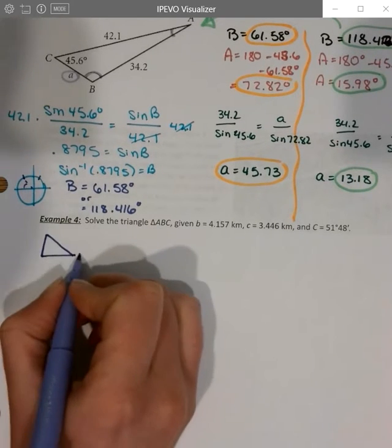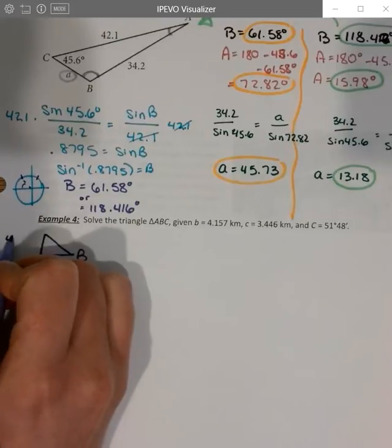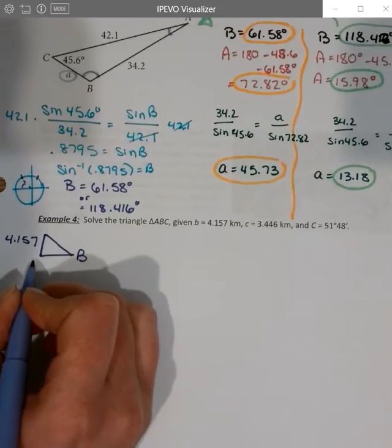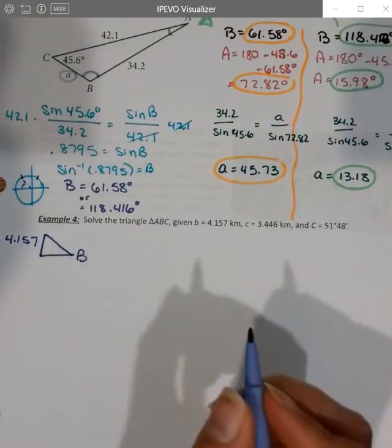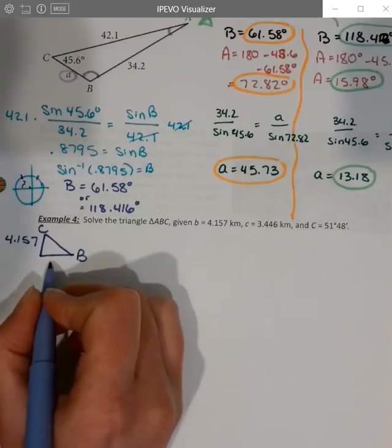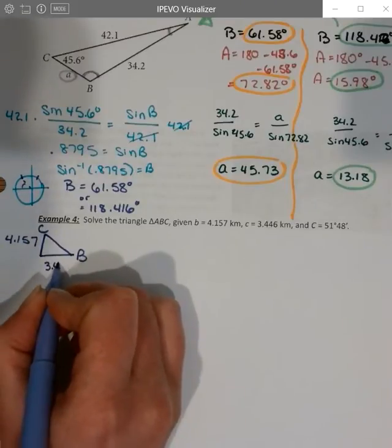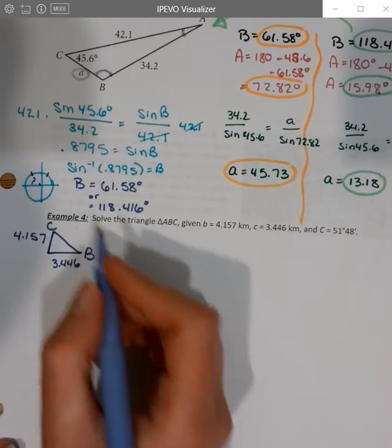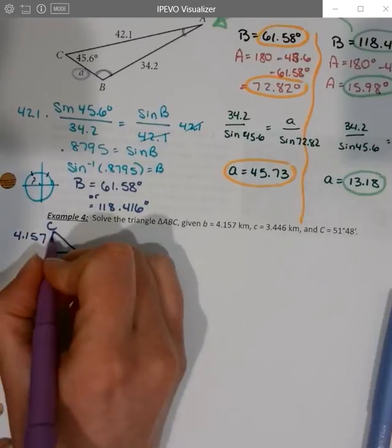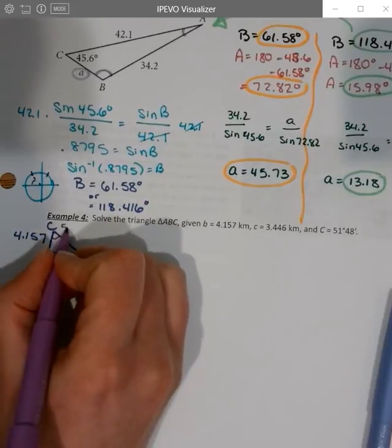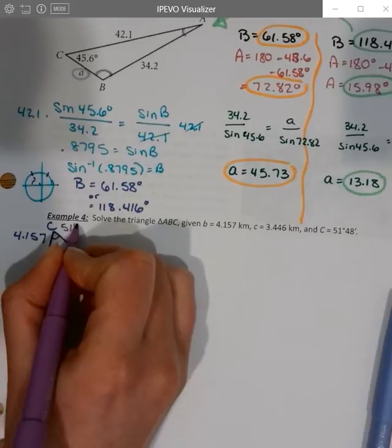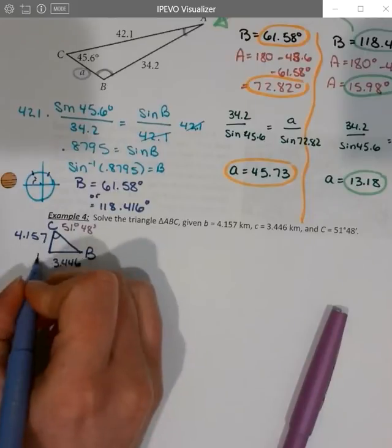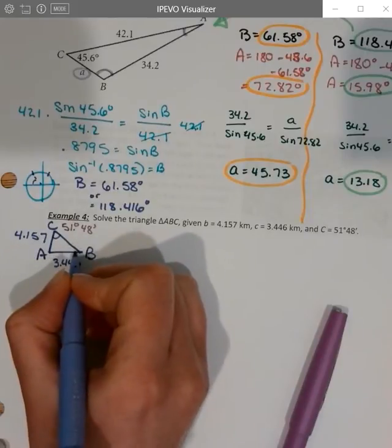and then we have an unknown length. So if I call this angle B, then I can label B as 4.157. If I call this angle C, I can label this as 3.446. You can see my drawing is already not to scale because that looks longer than that, but whatever. And so I can also note that the angle C is 51 degrees, 48 minutes. And then angle A is missing, angle B is missing, and side A is missing.